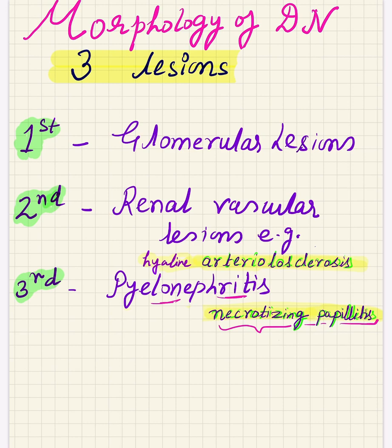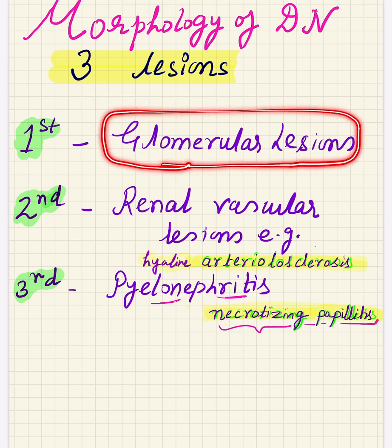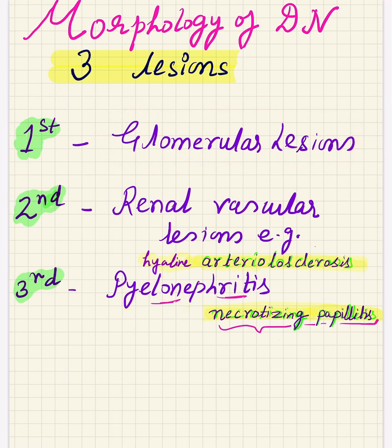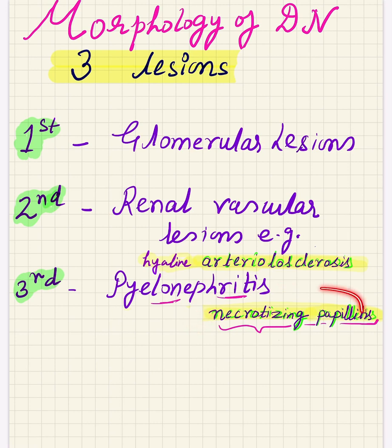In diabetic nephropathy, where the kidneys are involved, basically three lesions are seen. First are the glomerular lesions — lesions in the glomeruli. Second are the vascular lesions seen in the afferent and efferent arterioles and capillaries. Third is pyelonephritis, which is the inflammation of the interstitium and tubules of the kidney. Pyelonephritis in diabetes is specially associated with necrotizing papillitis — this is important for MCQs.